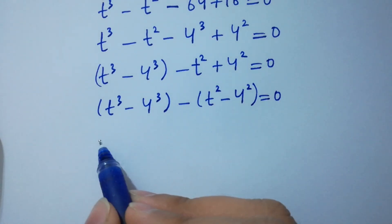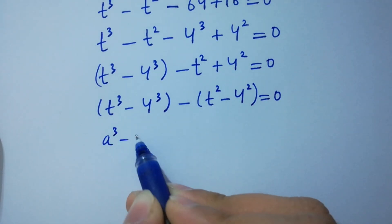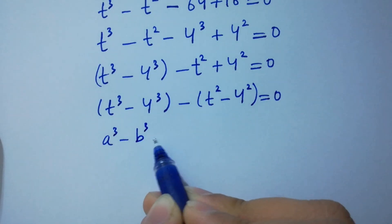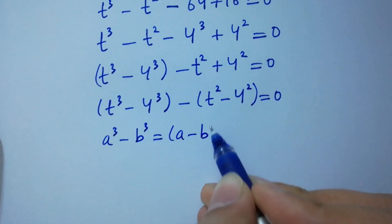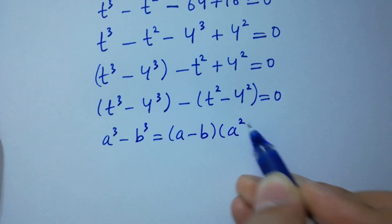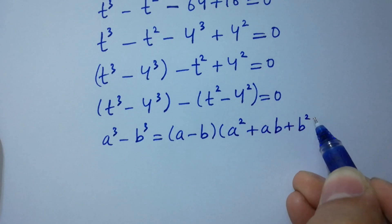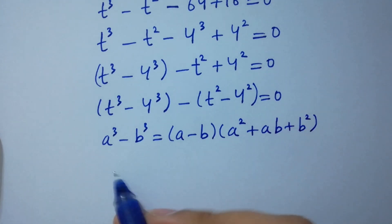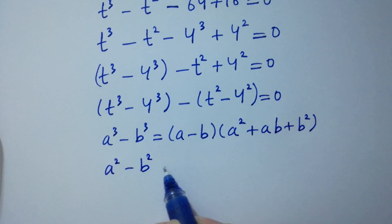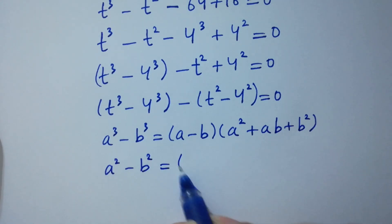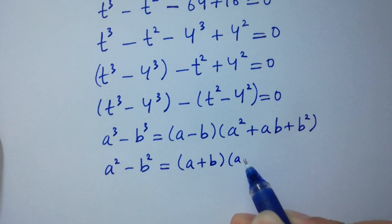As we know, a³ - b³ = (a - b)(a² + ab + b²), and a² - b² = (a + b)(a - b).